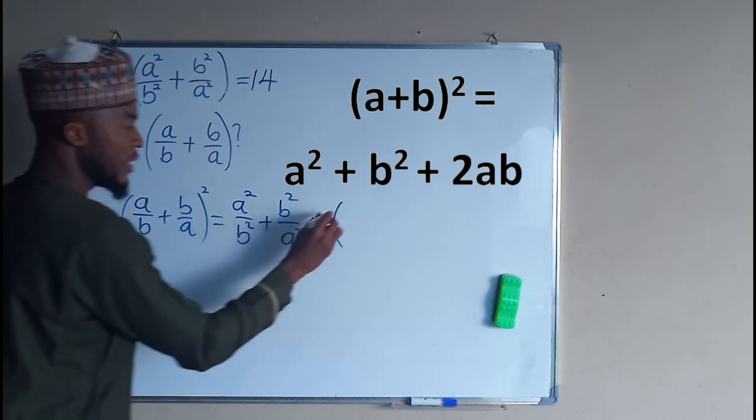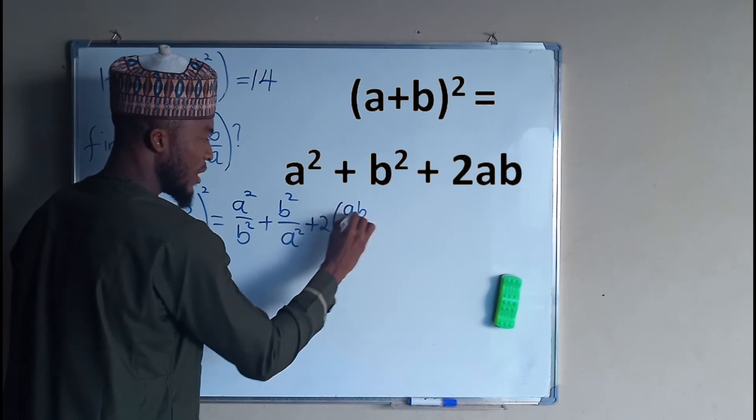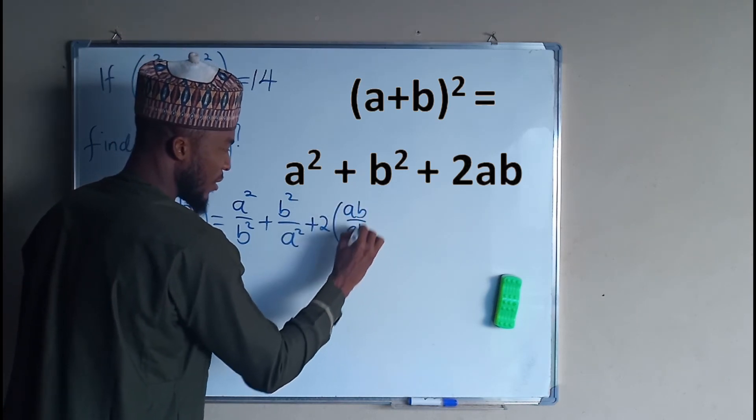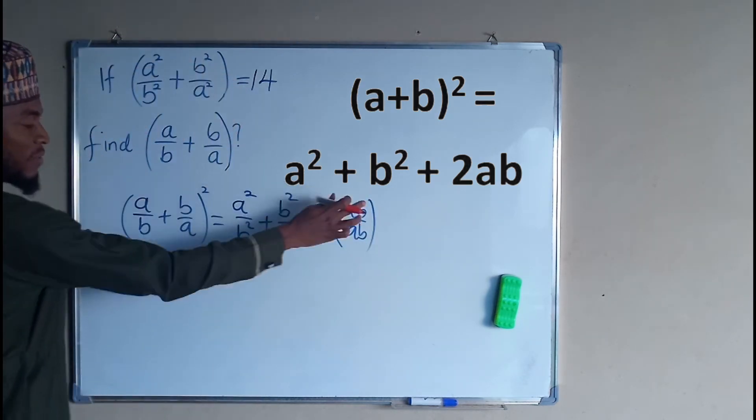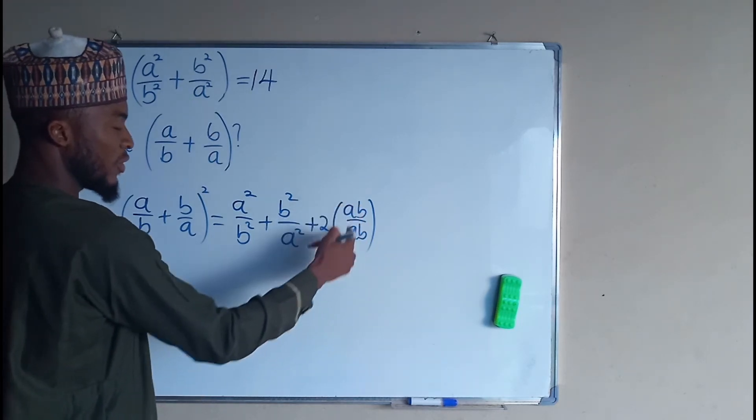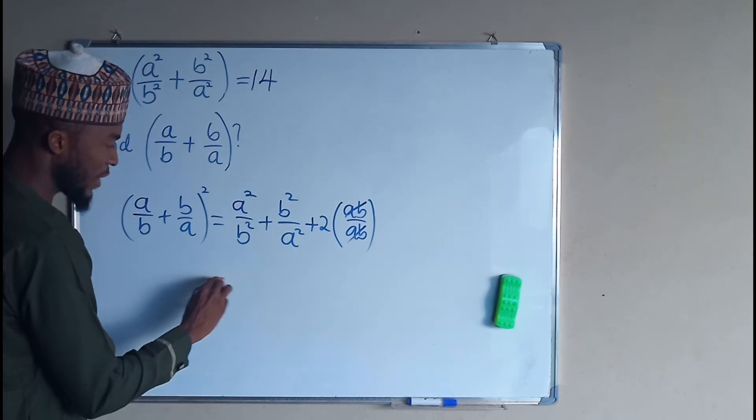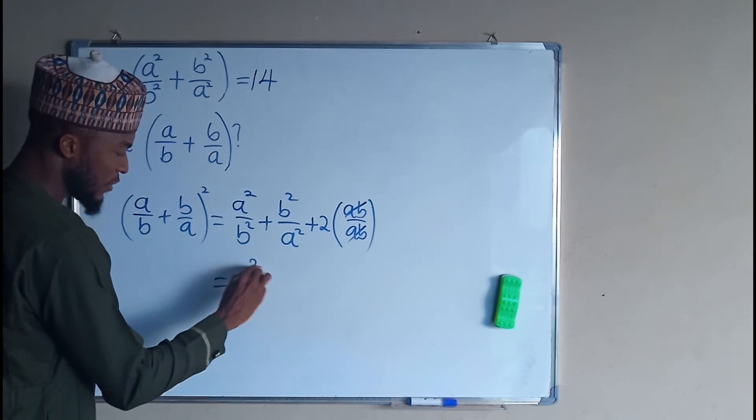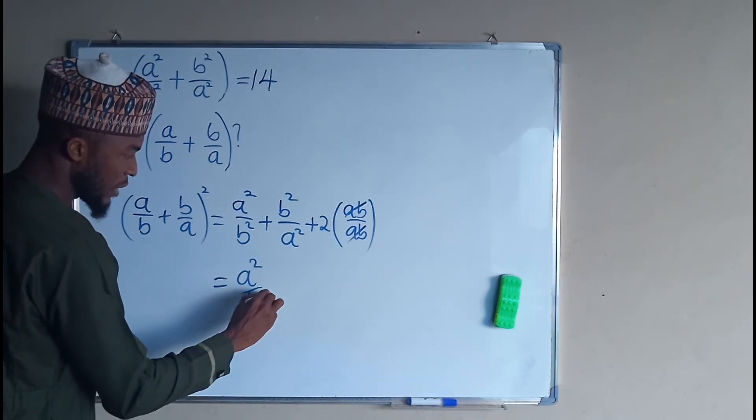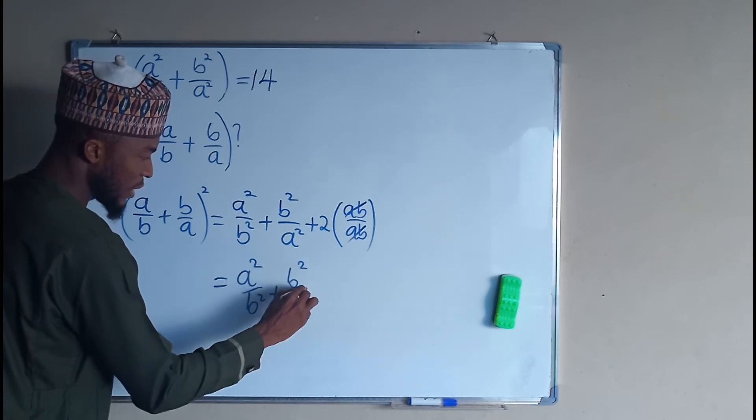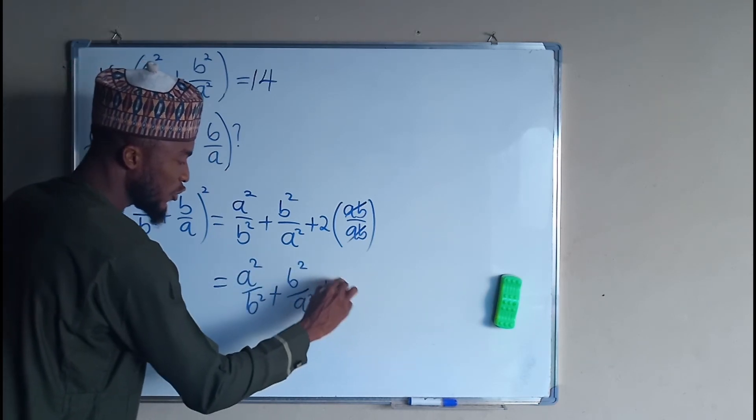If you multiply them, you get ab divided by ab. a times b is ab, b times a is ab. And because the numerator and denominator are the same, they cancel out. So we end up having only a² over b² plus b² over a² plus 2, because 2 times 1 is 2.